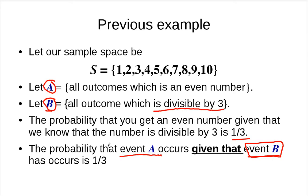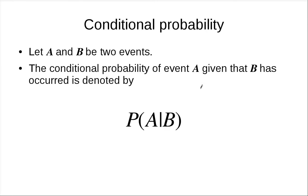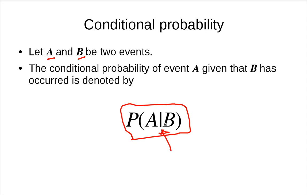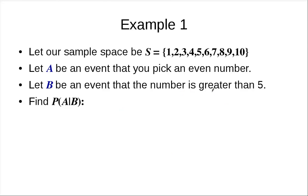We have a notation for this. Suppose we have two events A and B. The conditional probability of event A given that B has occurred is written with a vertical bar — P(A|B) — pronounced as 'probability of A given B.' Now let's do some examples. Let A be the event that you pick an even number, and B be the event that the number is greater than five. What is P(A|B)?